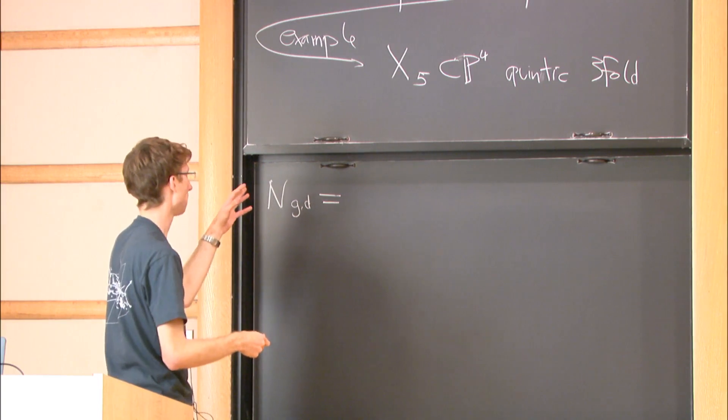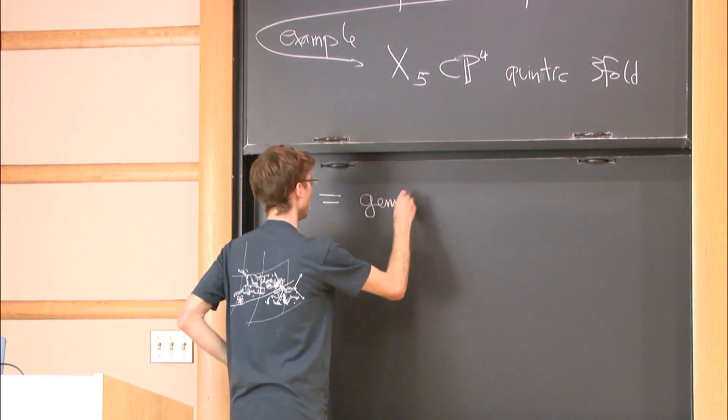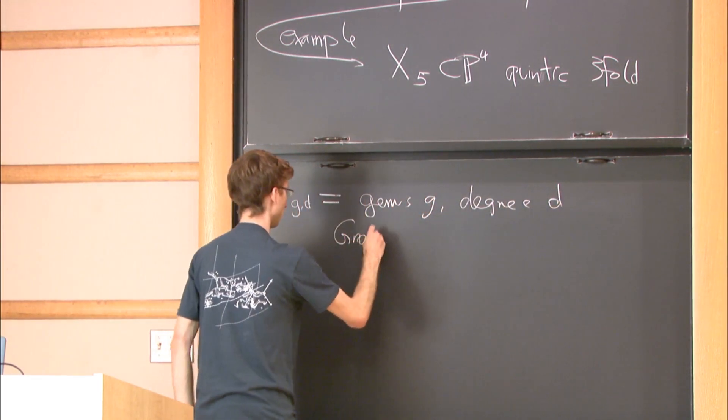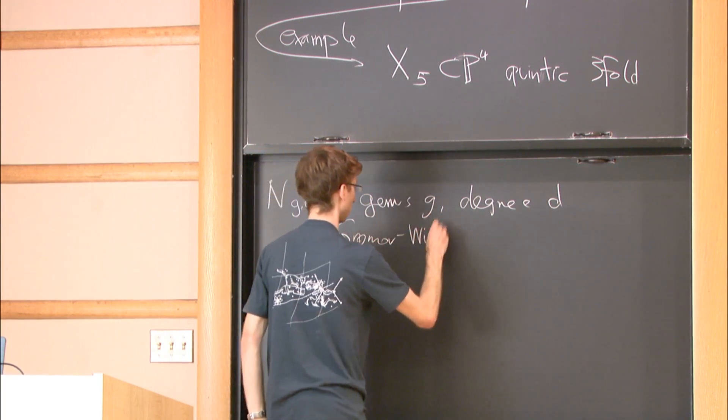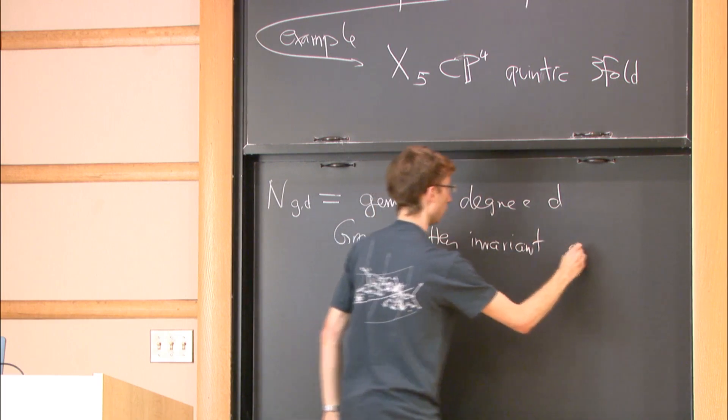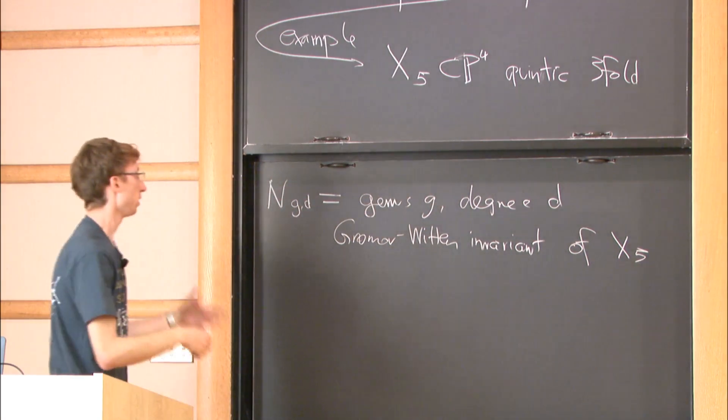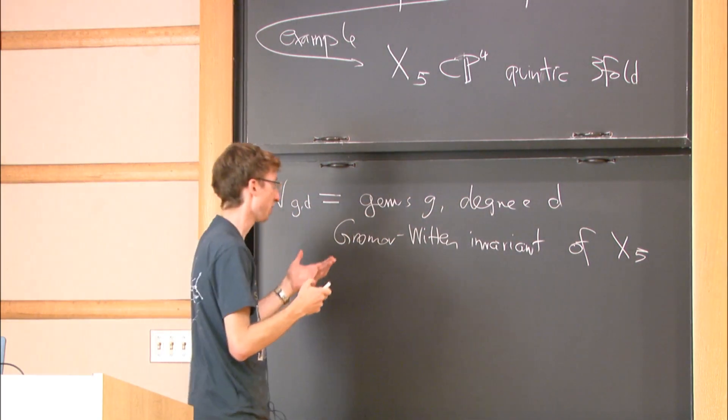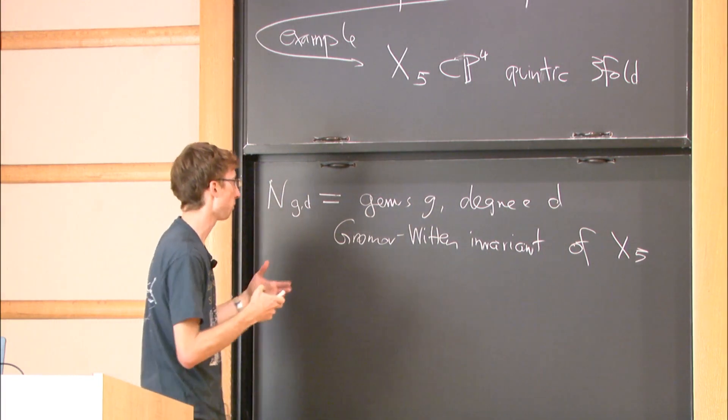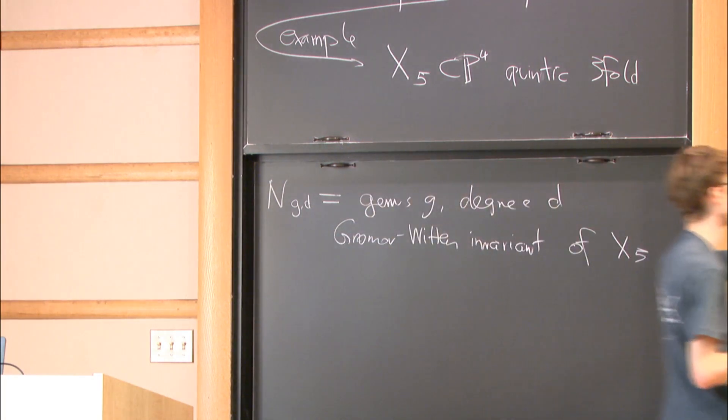For that, instead of counting the actual curves, we're going to look at the genus g, degree d Gromov-Witten invariant of X5. These Gromov-Witten invariants - the definition is pretty technical, so I can't give it here. But you should think of them being related to the count of genus g, degree d curves on a quintic.